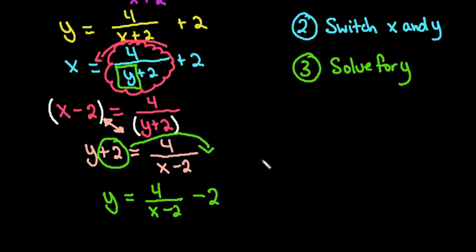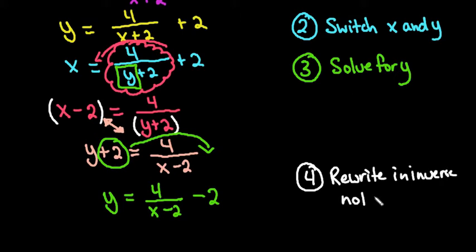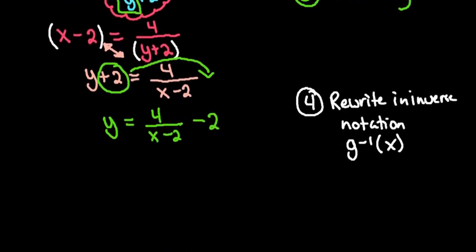And then don't forget that your final step is to rewrite it in inverse notation. This time because I use g of x, I would just write it as g to the negative 1 of x. It doesn't matter what your equation is. If you started with an f of x, then you write it as f to the negative 1 of x. Since we started with g of x, I would write this as g to the negative 1 of x.